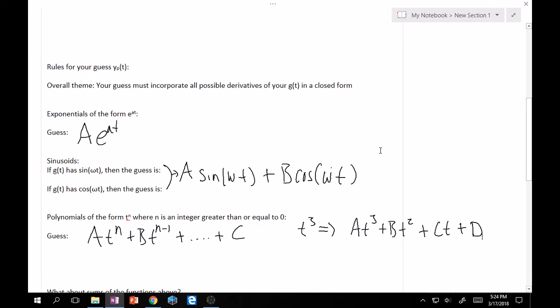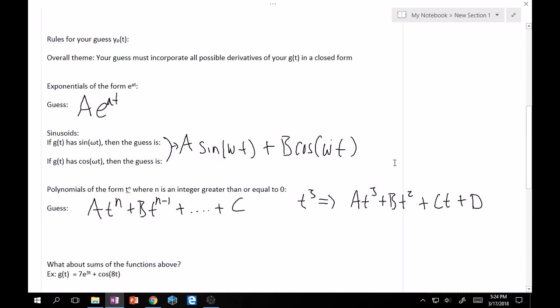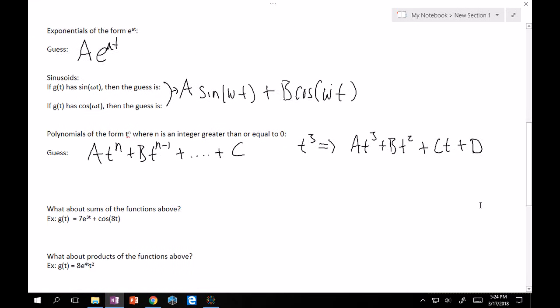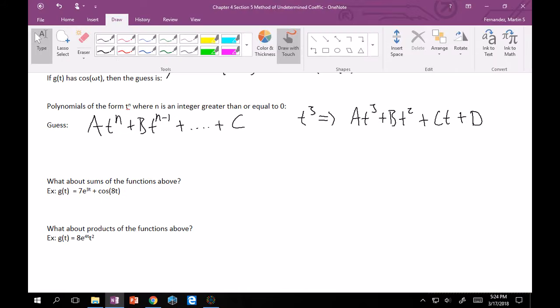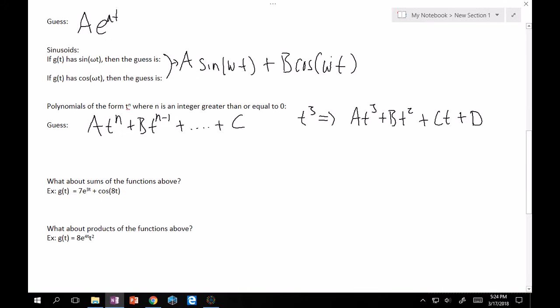So you know how to take the guesses for all three. Now we get into a little bit more complicated, what about if we have the sum of something? How do we take care of this? This is where linearity is a very beautiful thing. We can just take the guesses of each of them individually and just add them together. So the guess for 7e^(3t) is just Ae^(3t). And the guess for cosine of 8t is then you would plus B cosine 8t and remember you have to have that sine as well. So plus C sine of 8t. And that would be your guess if that was your g(t) on the right hand side.